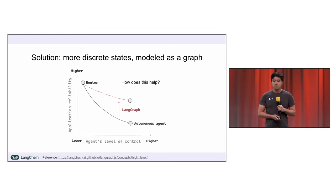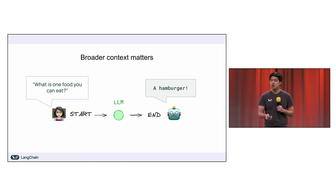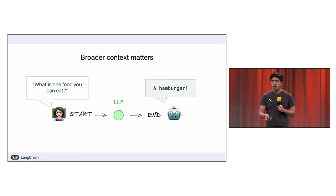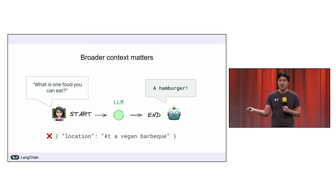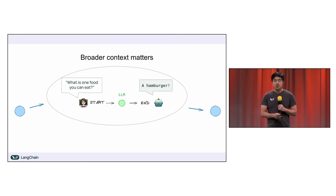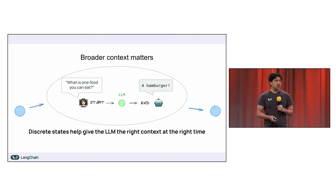How exactly does this help? The answer is again: context. LLMs align better to expectations when you give them more information. Here's an example — a pretty broad question: what's one type of food to eat? If the model responds 'a hamburger,' you've got to look at the broader context. That might be good if you're part of a McDonald's drive-through ordering flow, but if you're at a vegan barbecue, it's actually a pretty bad response. In multi-step tasks, if you don't account for this, these differences start to compound, resulting in poor results, as you see with a lot of fully autonomous agents today. These discrete states can help you structure your apps in a way that gives the LLM the right context at the right time, helping you build better-performing apps.